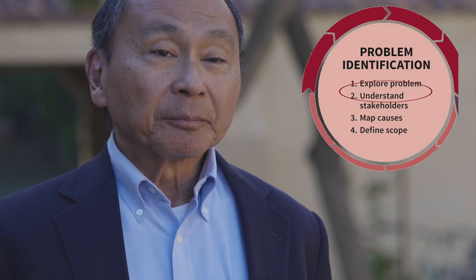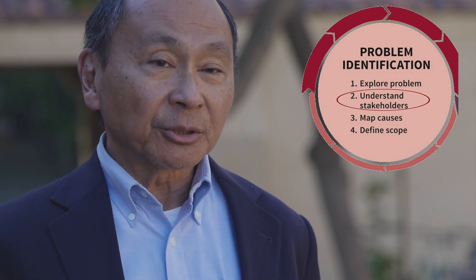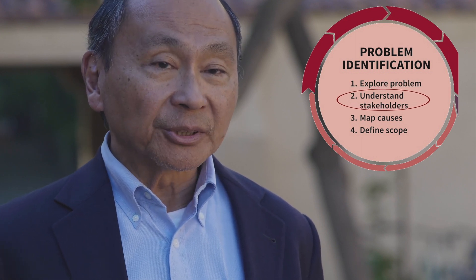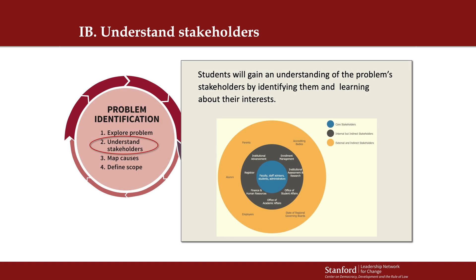The second step is to undertake, if possible, a preliminary consultation with stakeholders. We'll return to stakeholder strategy in the implementation phase. But for now, we want to make sure that we understand the points of view of important actors who either want the problem solved or who don't think it's a problem at all. In other words, both supporters and potential opponents.